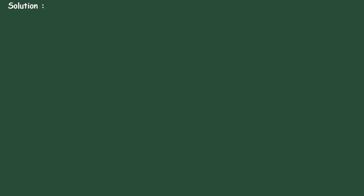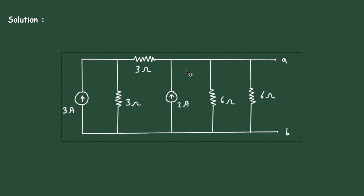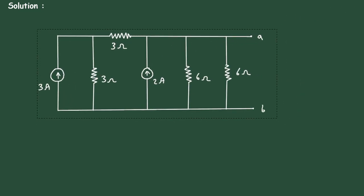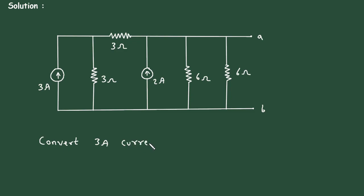Solution. First of all, we will redraw the circuit. Now, we will convert this 3 ampere current source into its equivalent voltage source. Here we will write: convert 3 ampere current source to voltage source.